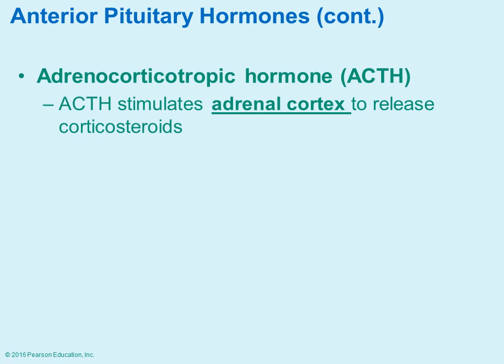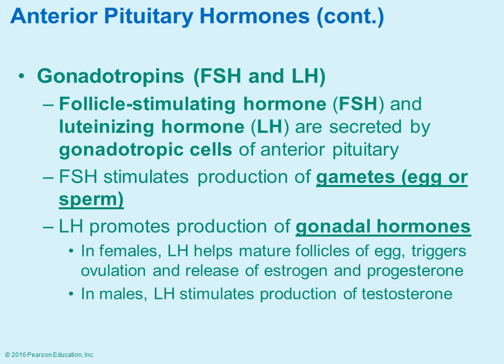ACTH, adrenocorticotropic hormone, stimulates the adrenal cortex to release its hormones. The gonadotropins — follicle stimulating hormone (FSH) and luteinizing hormone (LH) — help stimulate production of the gametes (egg or sperm). In females, LH helps with the maturation of follicles in the ovary, triggers ovulation, and stimulates release of estrogen and progesterone. In males, LH stimulates the production of testosterone.